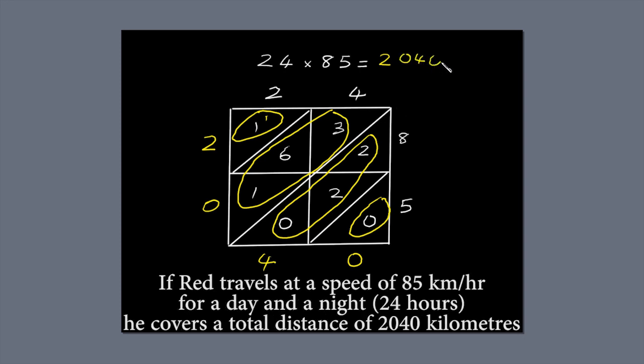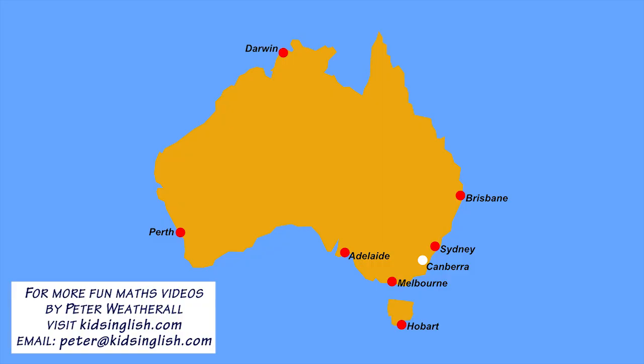So, if Red travels 85 kilometres an hour for a day and a night, he covers a total distance of 2,040 kilometres. That's almost the distance between Adelaide and Brisbane. Now, that's a long trip!